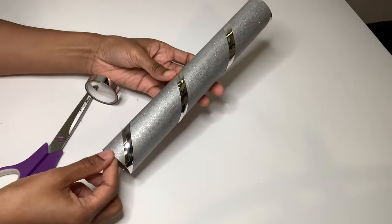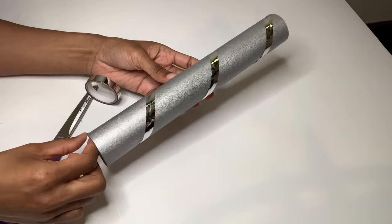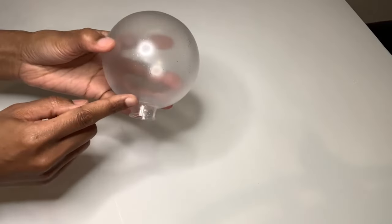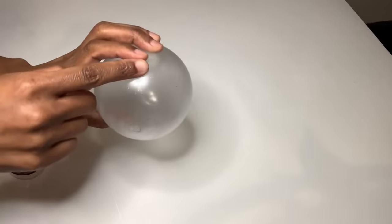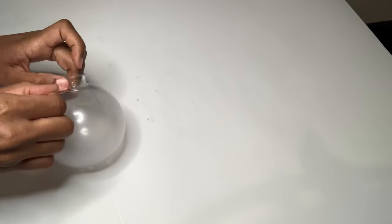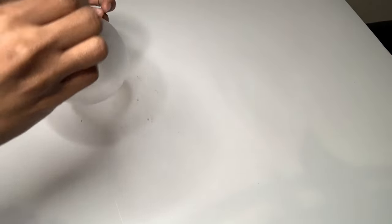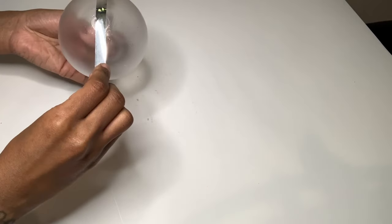If you are following along you should have something that looks like this. I'm going to take that same tape and follow this visible line. Glue was simply not needed for this step since the tape adheres to the Mod Podge very well.